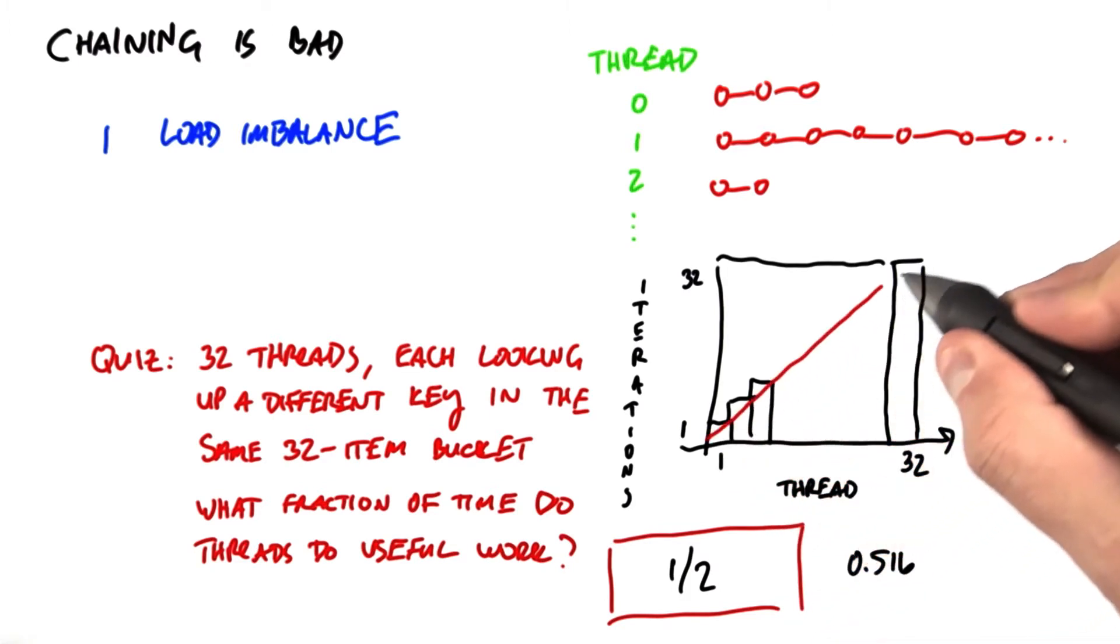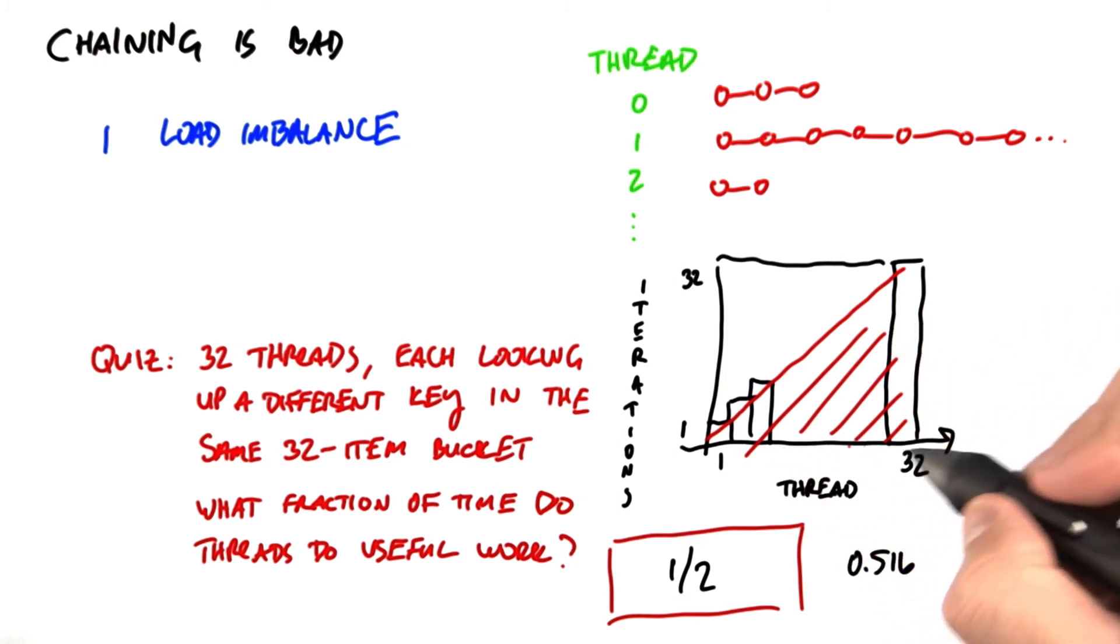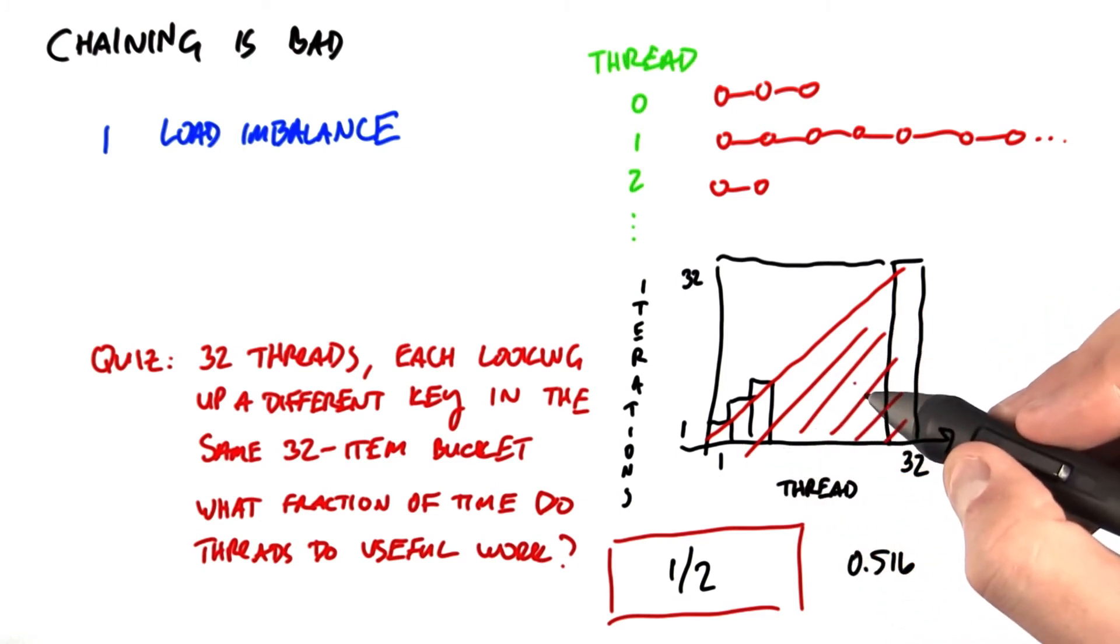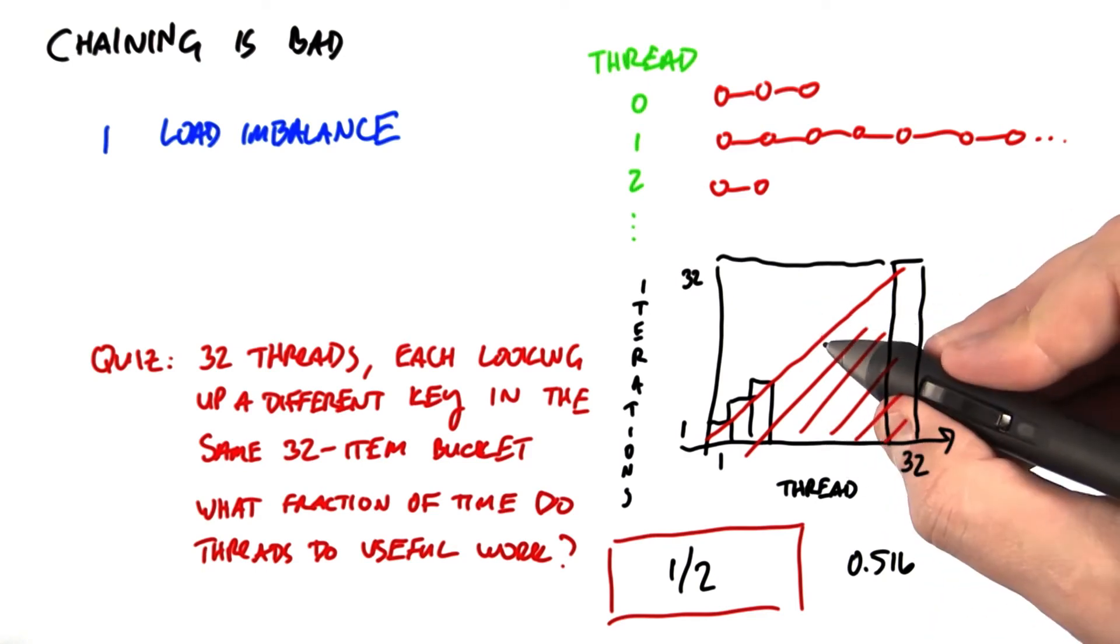So we see all of this area in that square as being useful. These threads are doing useful work. They're walking through the linked list until they find their item right here and stop.